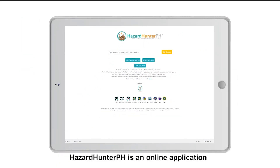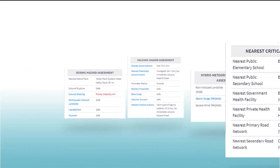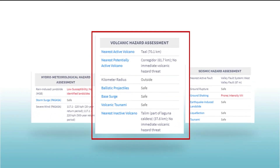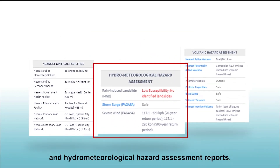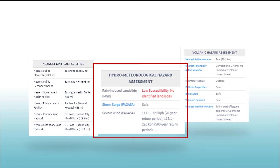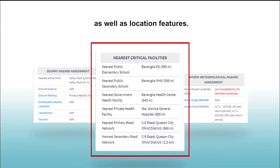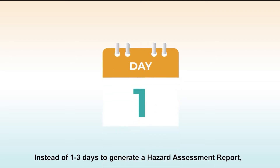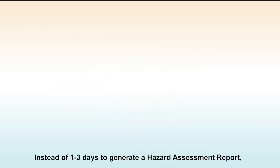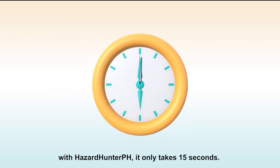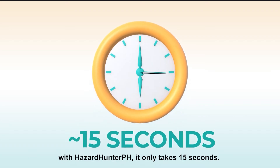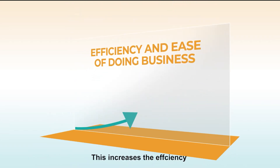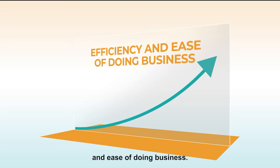Hazard Hunter PH is an online application designed to generate seismic, volcanic, and hydrometeorological hazard assessment reports, as well as location features. Instead of 1 to 3 days to generate a hazard assessment report, with Hazard Hunter PH it only takes 15 seconds. This increases the efficiency and ease of doing business.